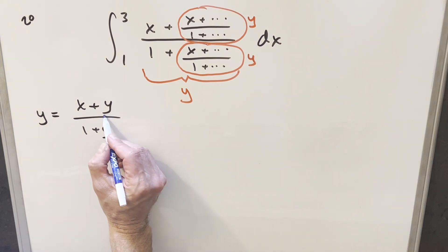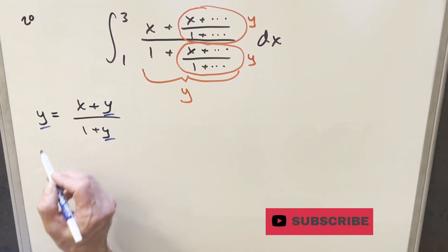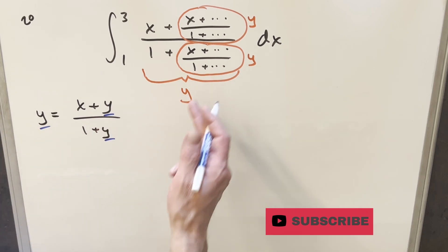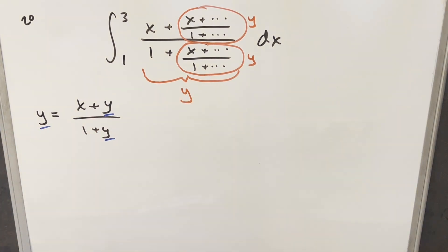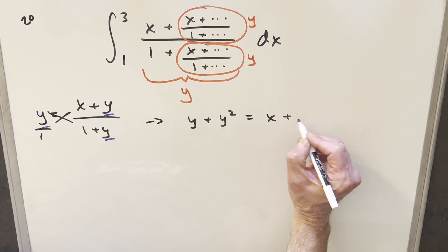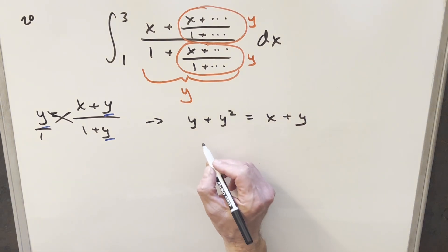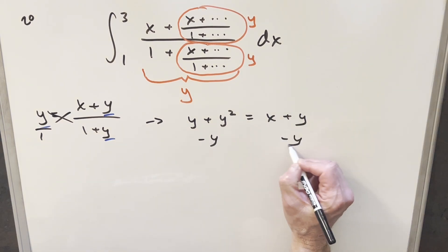And then my goal is just going to be to solve, we just want to solve for y. We just want to isolate y and solve for that all in terms of x, and then we can plug it back into the integral, and hopefully that's something we can deal with. So what I'll do here is cross multiply. So if we multiply y times 1 plus y, we're going to have y plus y squared on the left side, and then 1 times x plus y, we'll have just x plus y here. But then I can subtract the y on both sides, so that's gone and that's gone.